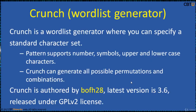Crunch is a wordlist generator where you can specify a standard character set. It supports numbers, symbols, and upper and lower case characters. Crunch can generate wordlists with all possible permutations and combinations. The latest version is 3.6, released under GPL v2 license.